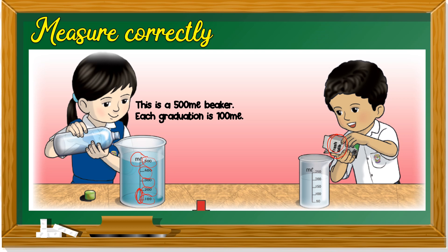How about the boy? What's the boy's beaker? It's a 250 milliliter beaker. So this is a 250 milliliter beaker. How about the graduation? We take a look here. 100 minus 50 is 50. So each graduation is 50.